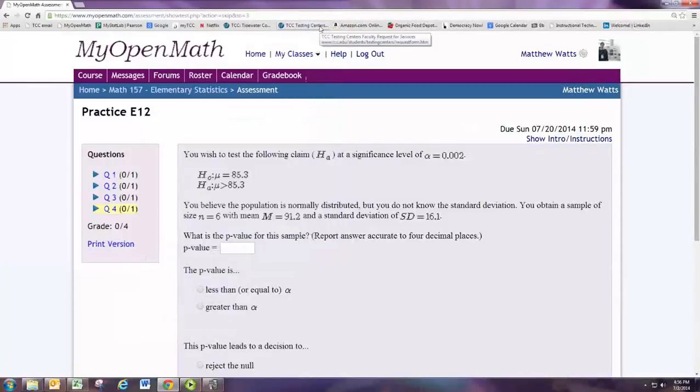In this video, we'll see how to do practice problem 4 from experience 12. You wish to test the following claim, H sub alpha, the alternative hypothesis, at a significance level of alpha equal to 0.002.